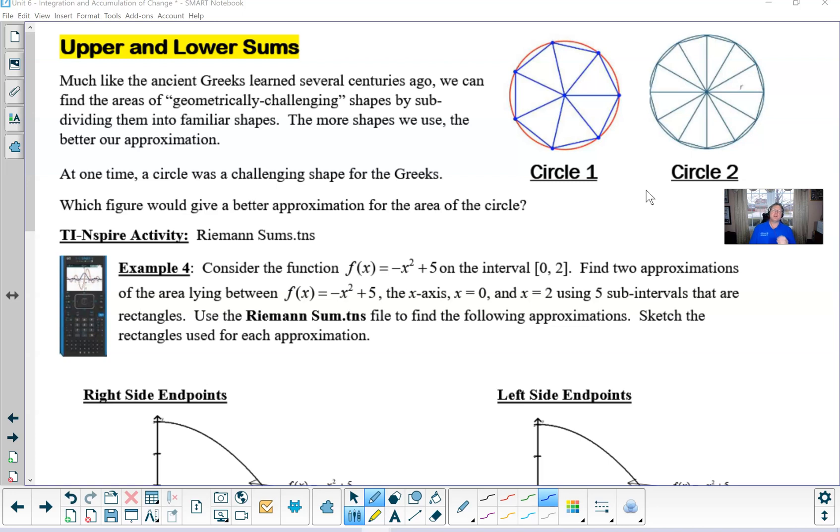If we were to only find the area of all of the triangles added together, which of those two total areas would be a better depiction for the entire region of the circle? And hopefully you're all thinking circle number two. And that's exactly right.